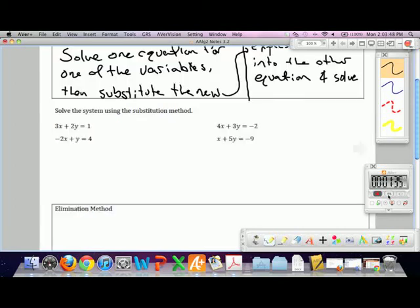I want to solve this first system by substitution. Let's find an equation that we can easily solve for one of the variables. The second one, we can solve for y pretty quickly by just adding 2x to both sides. Let's rewrite this as y equals positive 2x plus 4.